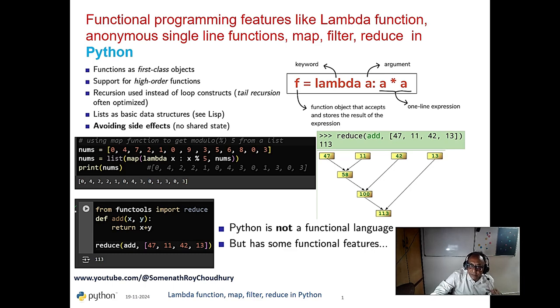Today we are discussing the functional programming style in Python. It is clear with the help of lambda function, map, filter, reduce. These four functions together give the flavor of functional programming style.